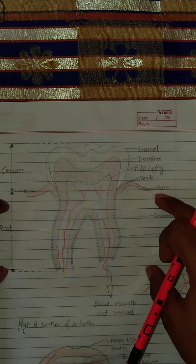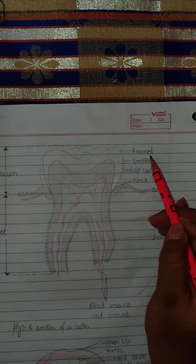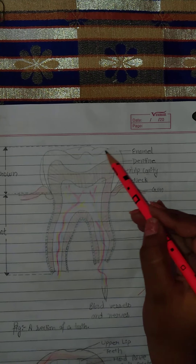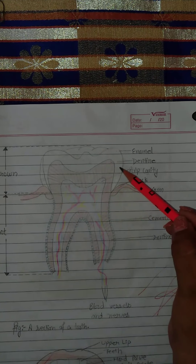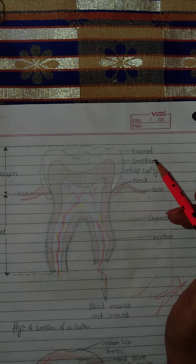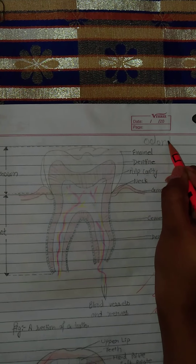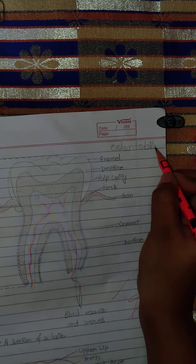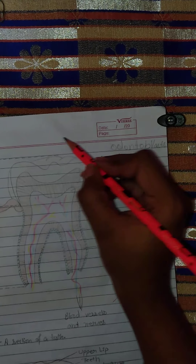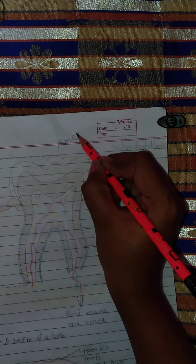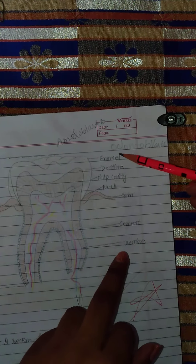This is known as enamel — the bite portion of the teeth. This is the hardest portion of the teeth and it covers the dentine. The dentine is formed of odontoblasts — these are the cells. Odontoblasts form the dentine, and enamel is formed of ameloblasts. So these two types of cells help in the formation of enamel and dentine.